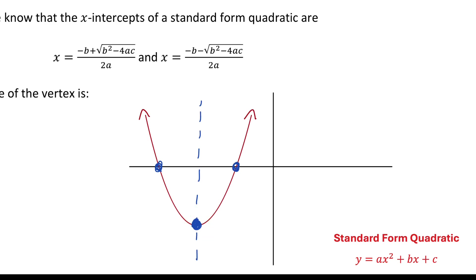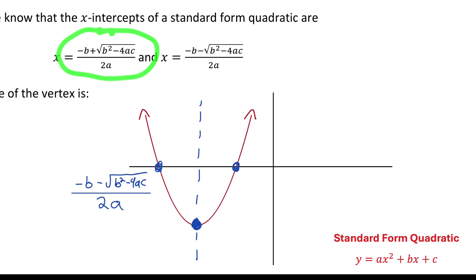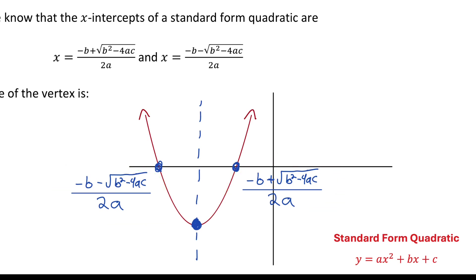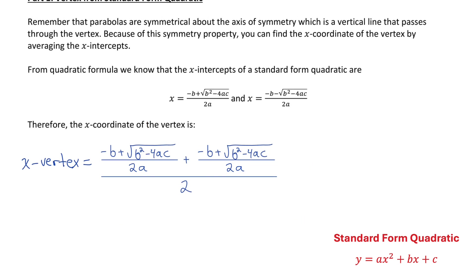From the quadratic formula, we know an equation to get both of those x-intercepts. The quadratic formula tells us that the x-intercepts are equal to negative b minus the square root of b squared minus 4ac over 2a, and negative b plus the square root of b squared minus 4ac all over 2a. So to get the x-coordinate of the vertex, we just have to average these two expressions. When averaging values, we add them and divide by 2, so let me show you what happens when we add these two values and divide by 2.